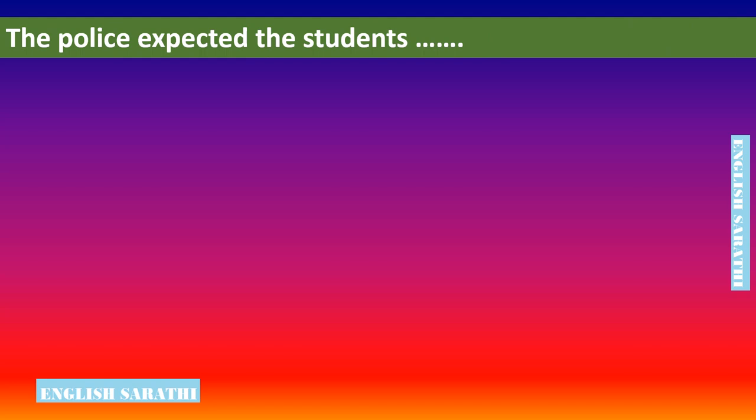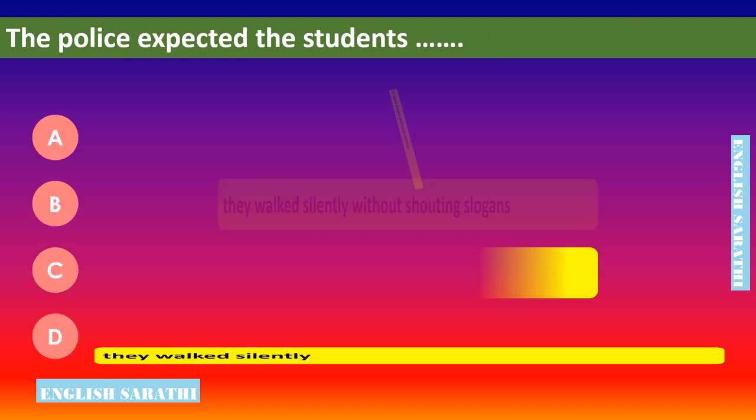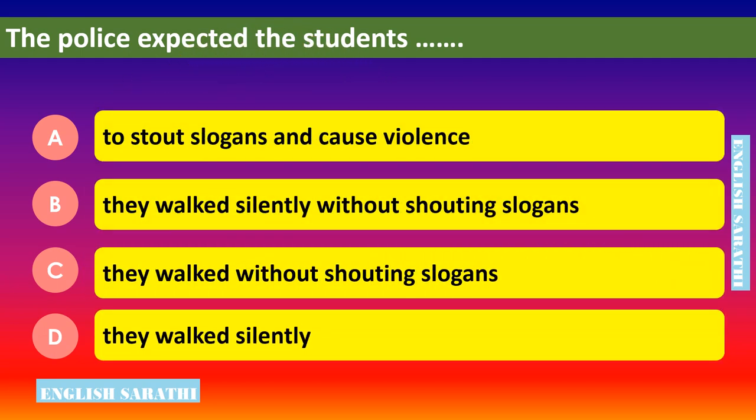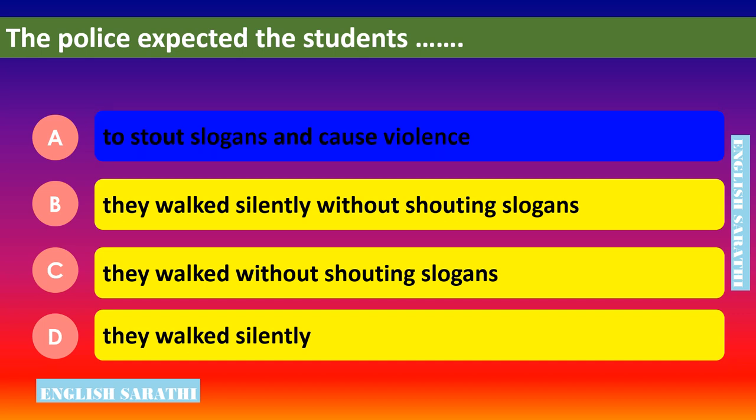The police expected the students to dash. Options are: option A - to start slogans and cause violence, option B - they walked silently without shouting slogans, option C - they walked without shouting slogans, option D - they walked silently. The correct option is option A - to start slogans and cause violence.